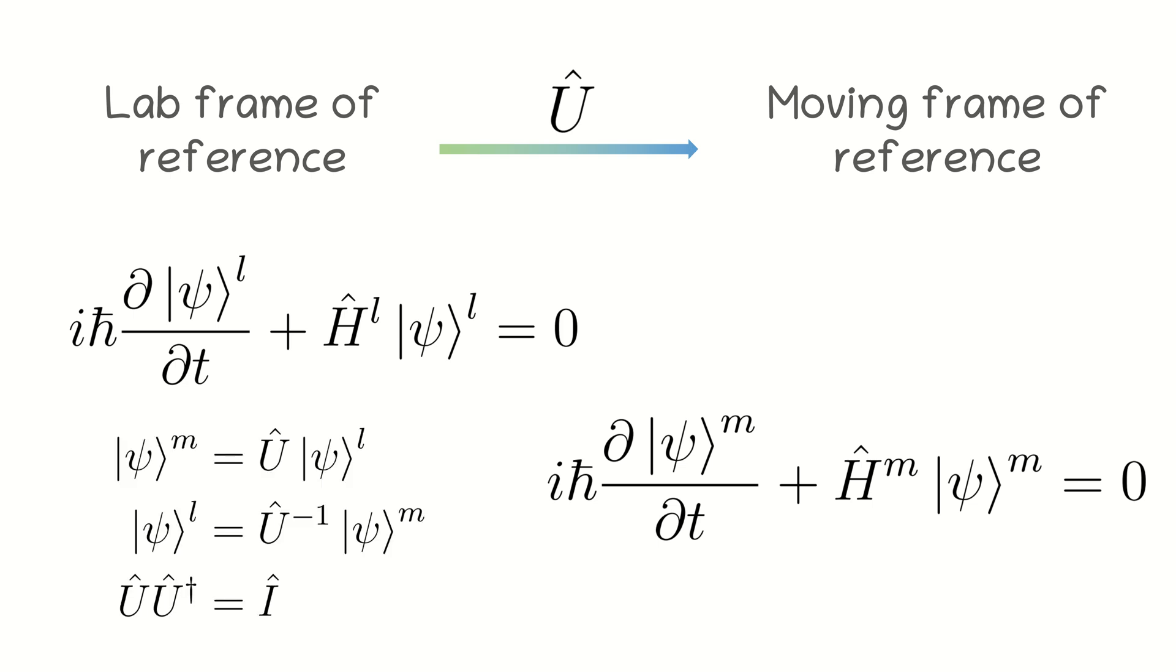For this purpose, we will use the Schrödinger equation presented on the screen and the equations for the wave function. The wave function in the moving frame can be found by applying an evolution operator to the wave function in the lab frame and the other way round. In addition, we will use the fact that the evolution operator is a unitary operator.